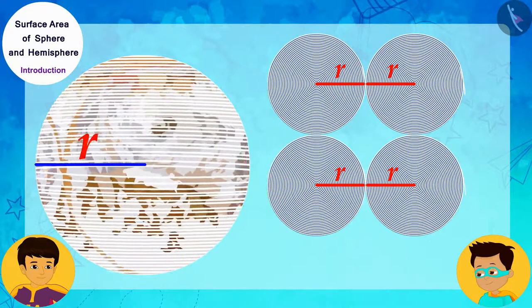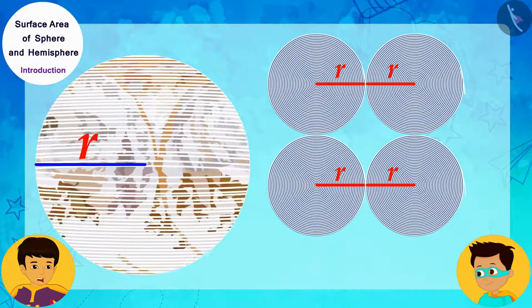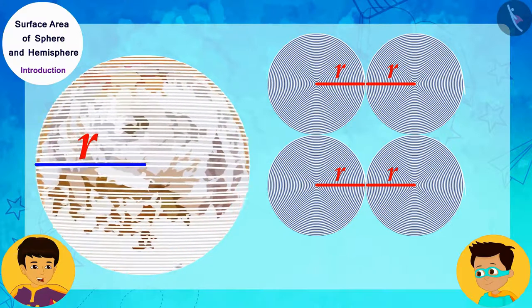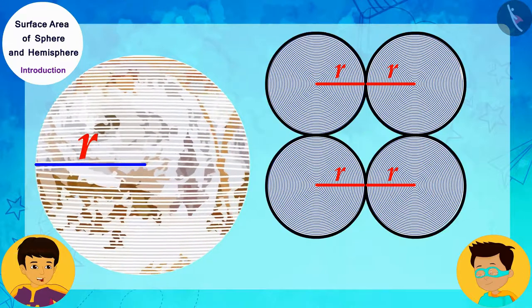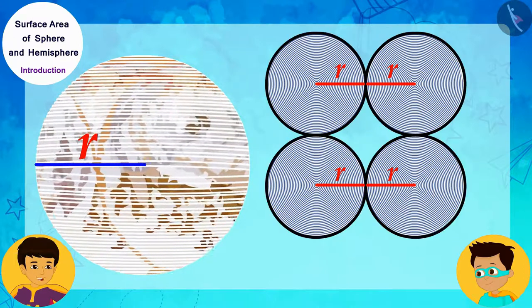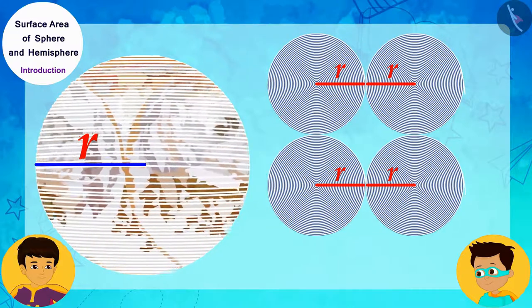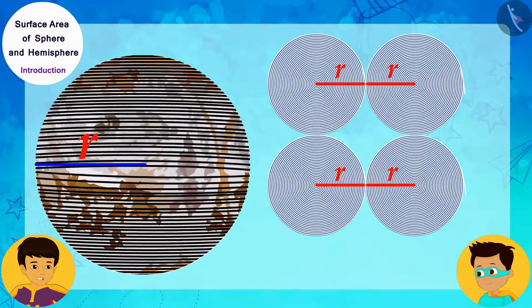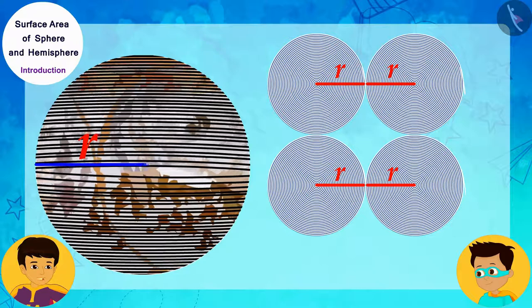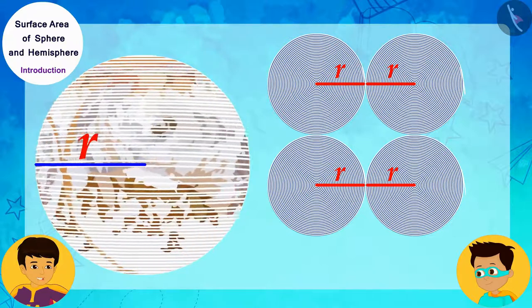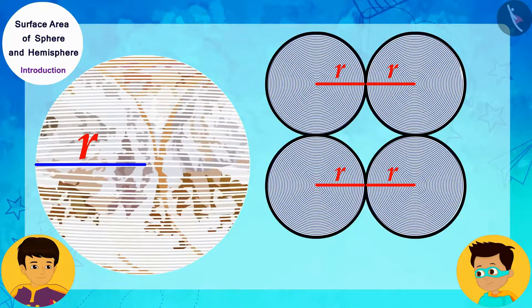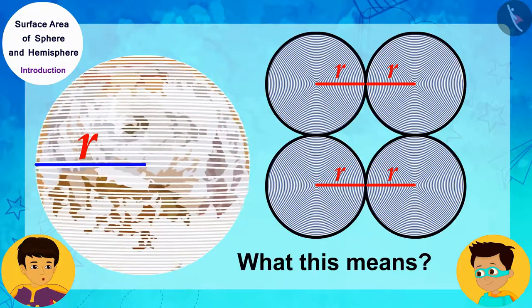...and fill the circles by placing the string we had wrapped the spherical sweet with one by one, then we will find that the string which completely covered the surface of the sphere is now filling the surfaces of four circles with same radius as that of the sphere. Can you tell me what this means?